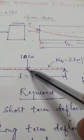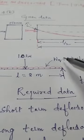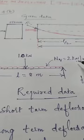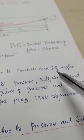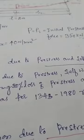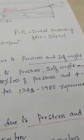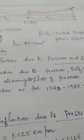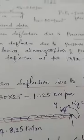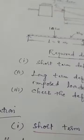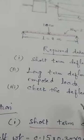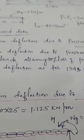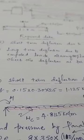The live load is 10 kN central concentrated load, and the external UDL wq is 2 kN/m. Required: (i) short-term deflection due to prestress and self-weight — it is clearly mentioned not to add live load deflection here; (ii) long-term deflection due to prestress with a prestress loss of 20% and creep coefficient φ = 1.8; and (iii) check the deflection as per IS 1343:1980.